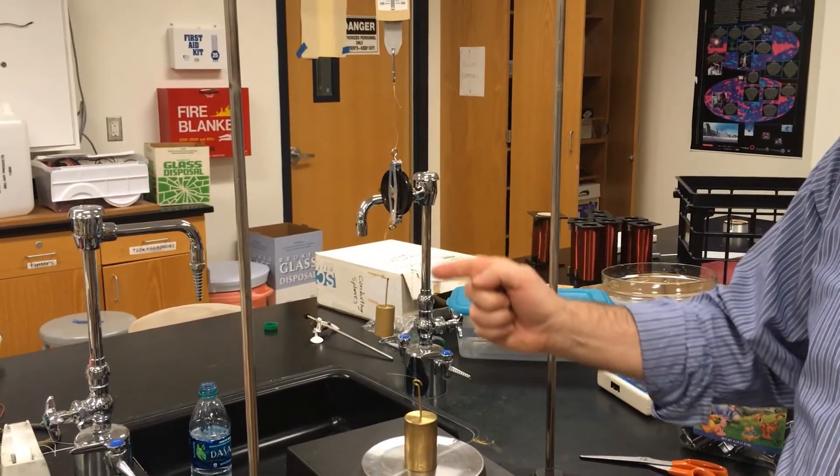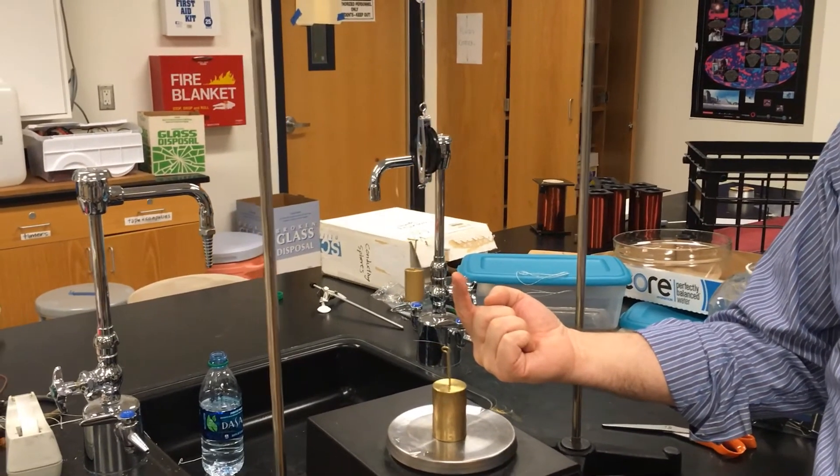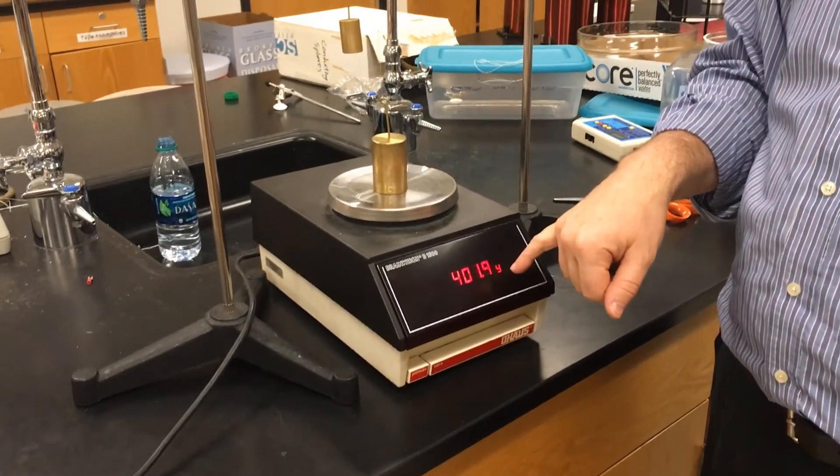Since tension in a rope or a string is the same everywhere, this must be 100 grams up, 500 grams down, the difference being 400 grams on the scale.